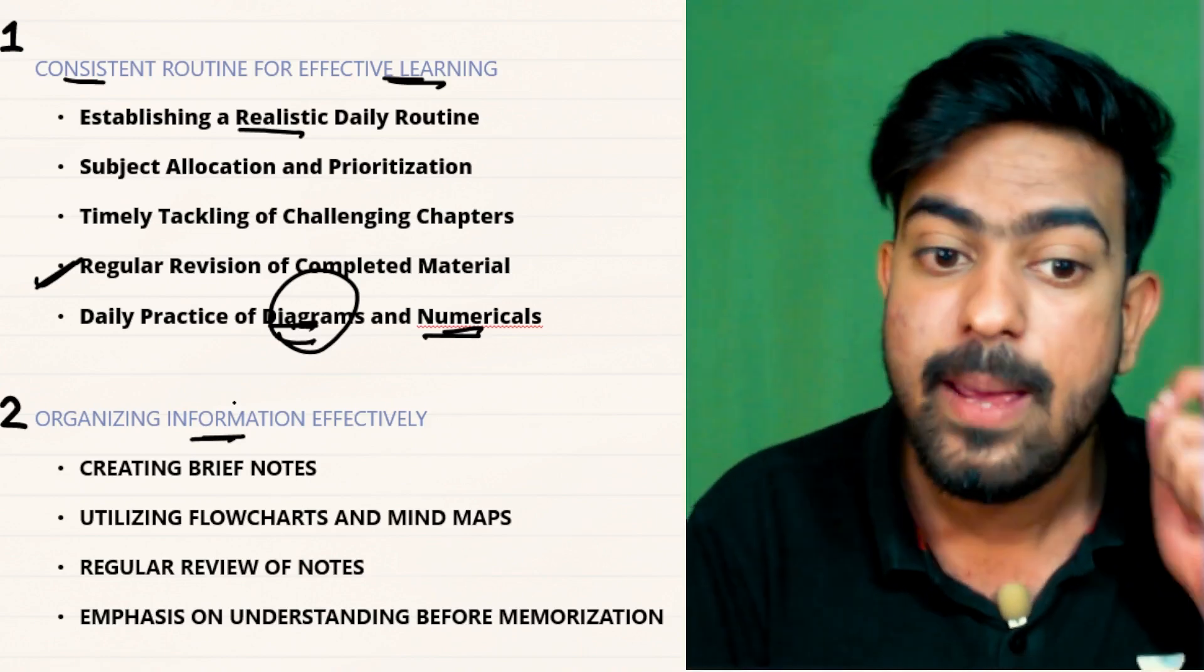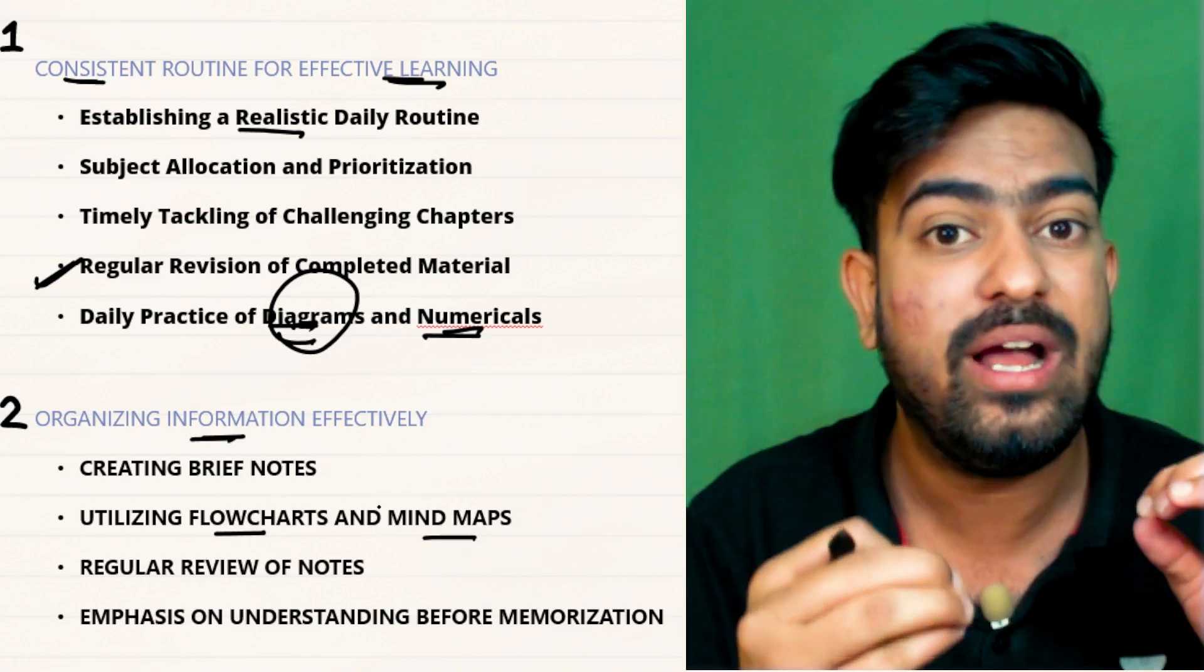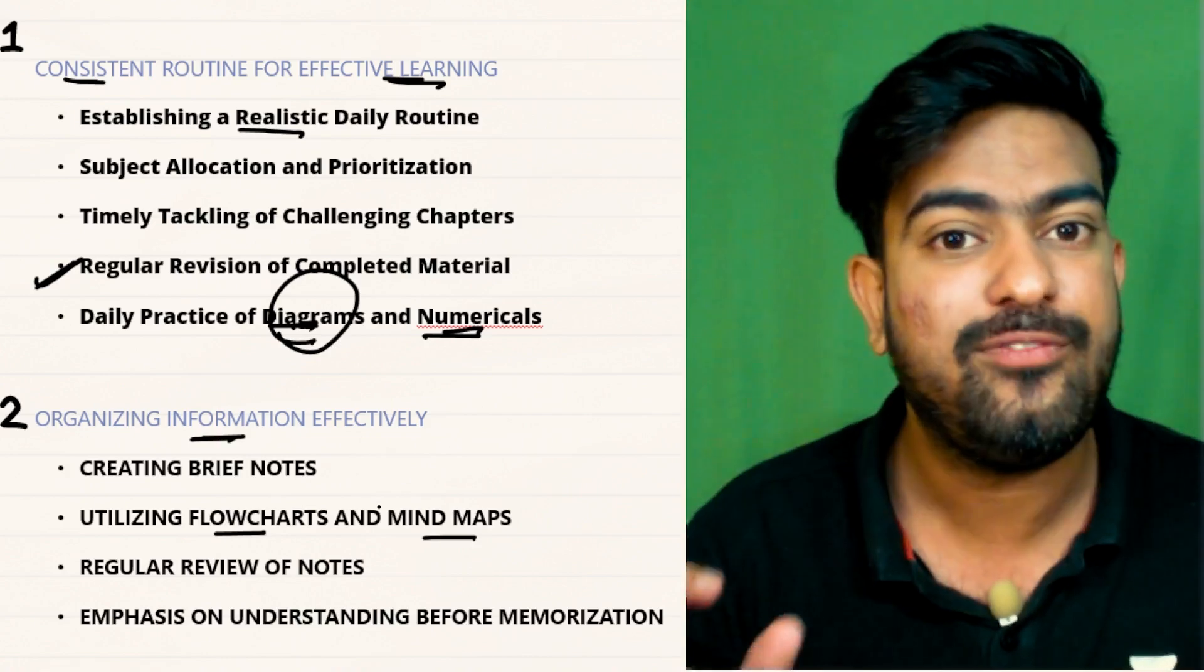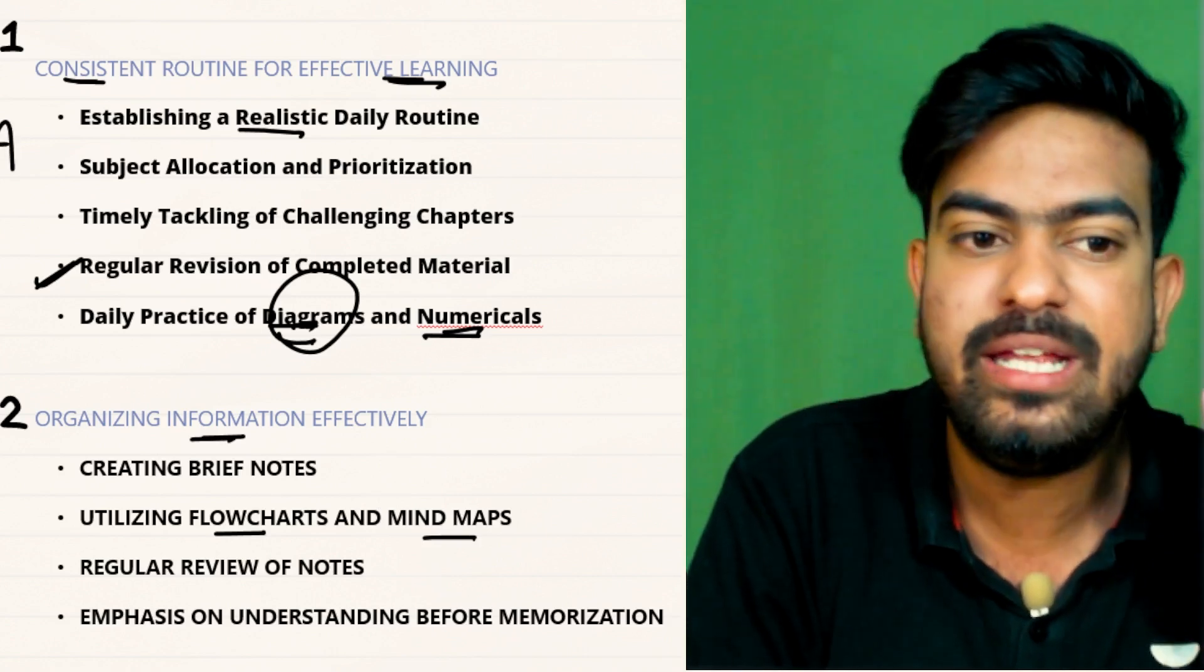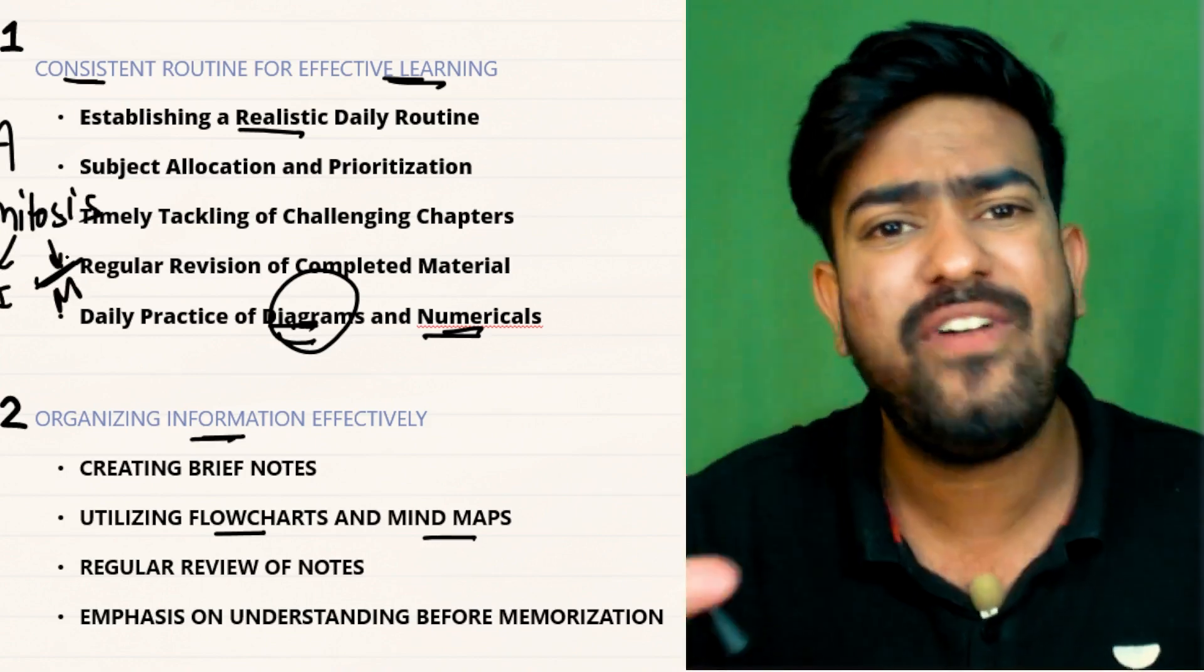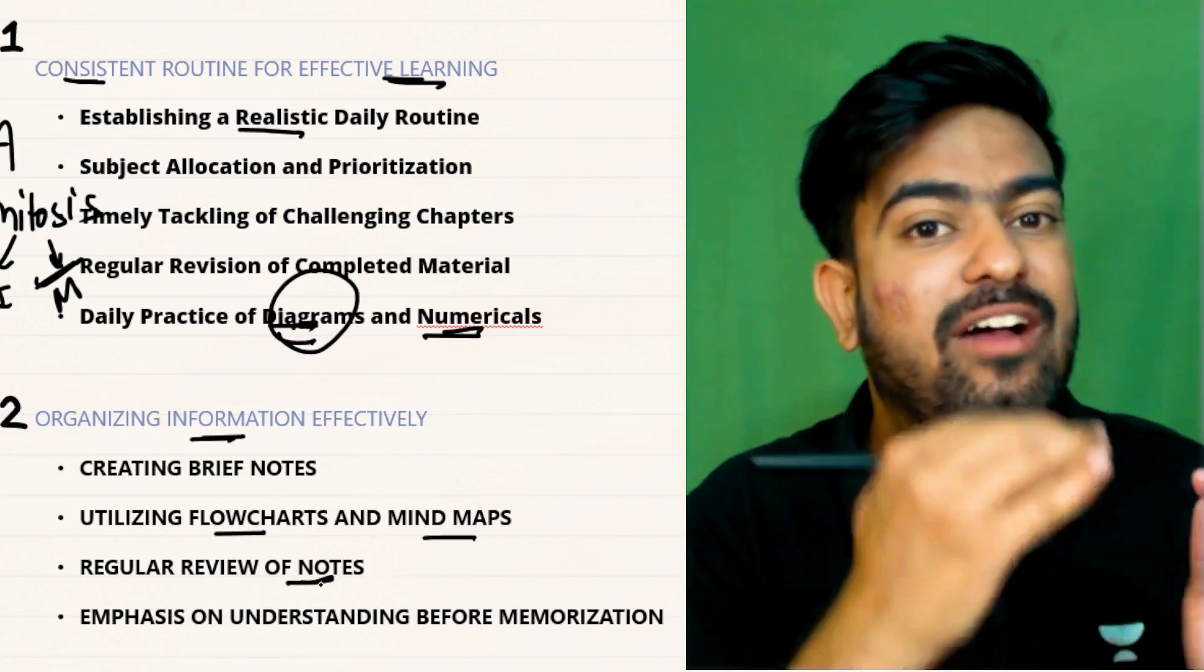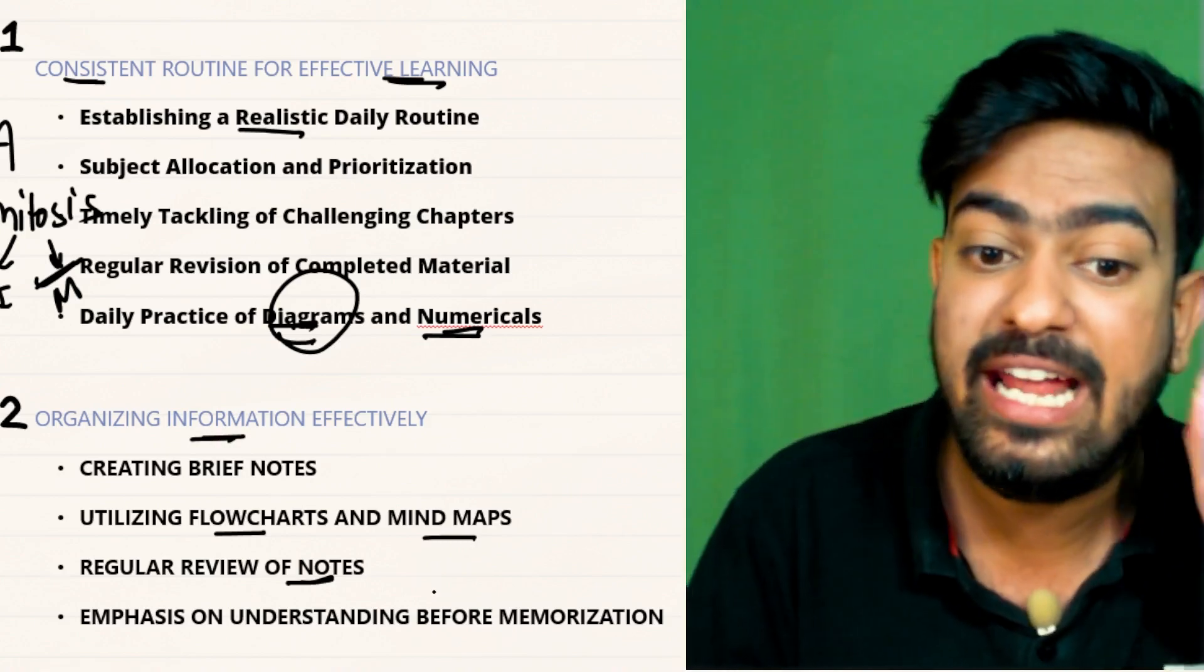Make a flowchart and mind map. It's very helpful. Whatever you have learned, just write it. If you don't know how to make a flowchart, just do it like this. Now say topic A, you have learned mitosis, okay? And in mitosis we have two phases: interphase and M phase. Make it like this. No fancy needed, just make it. Now regular review of notes. You have to, like per week, review your notes, whatever you have studied. And emphasize more on understanding.